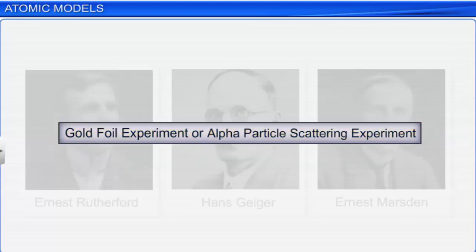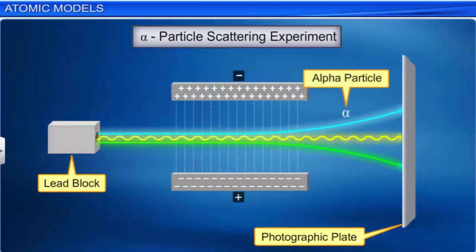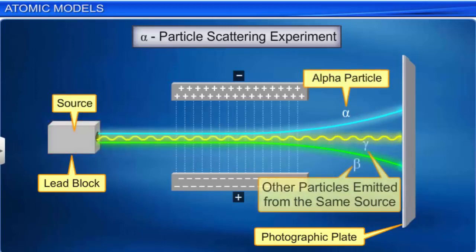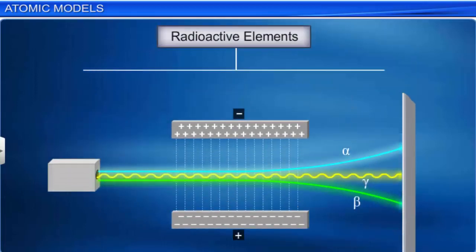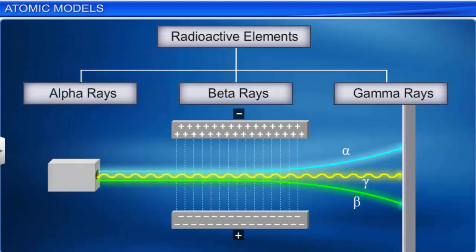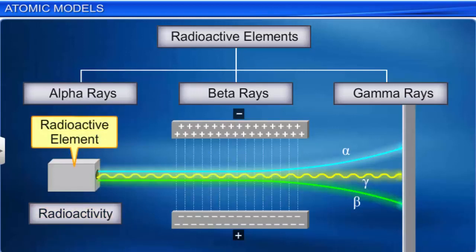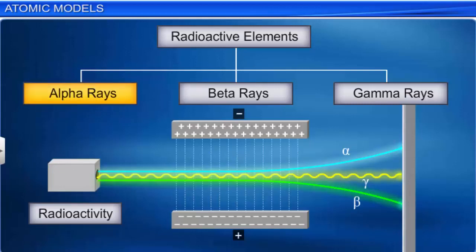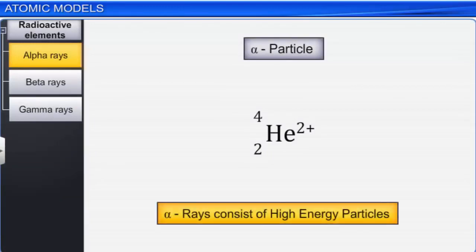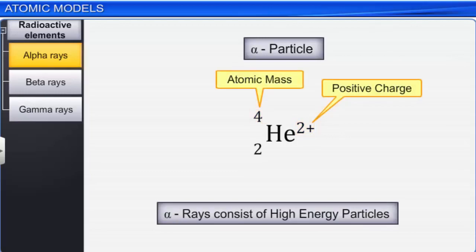Before proceeding to the alpha particle scattering experiment, let us acquaint ourselves with the term alpha particle, its source, and other particles emitted from the same source. Certain elements emit radiation on their own — this phenomenon is called radioactivity, and such elements are called radioactive elements. The alpha rays are emitted by these radioactive elements along with beta and gamma rays. Rutherford found that alpha rays consist of high energy particles carrying two units of positive charge and four units of atomic mass — hence, these particles are dipositive helium nuclei.